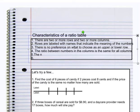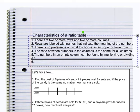Number five, the numbers in an empty column can be found by multiplying or dividing a completed column by the same factor.